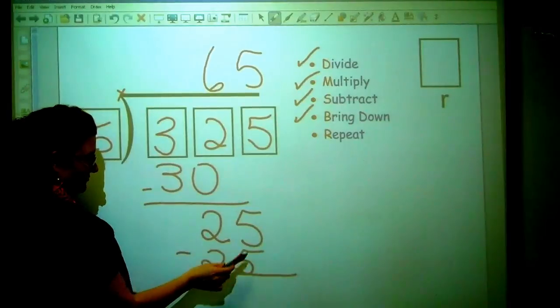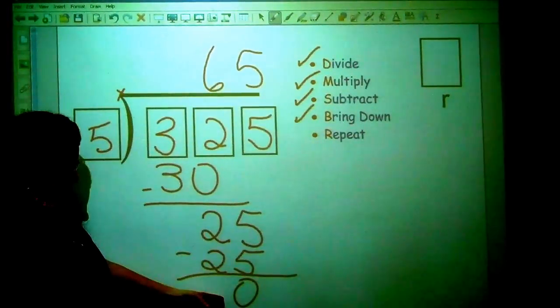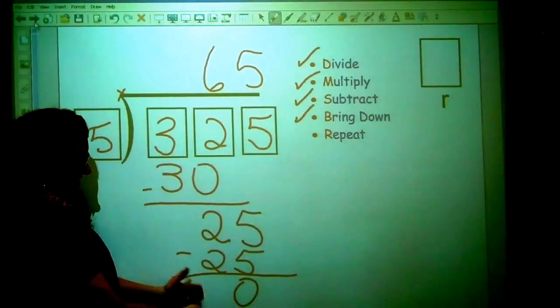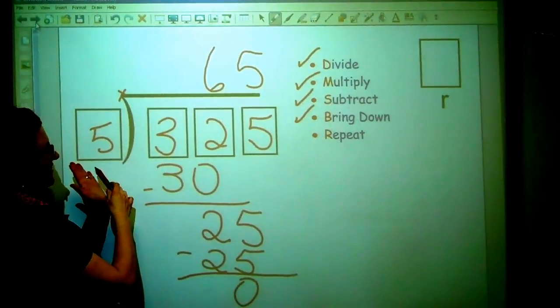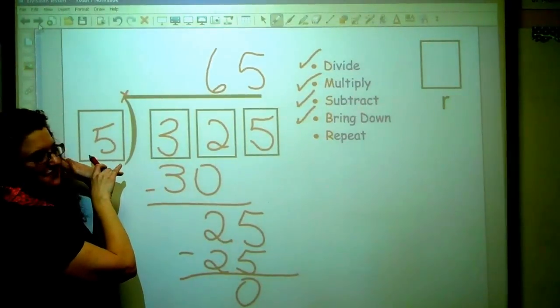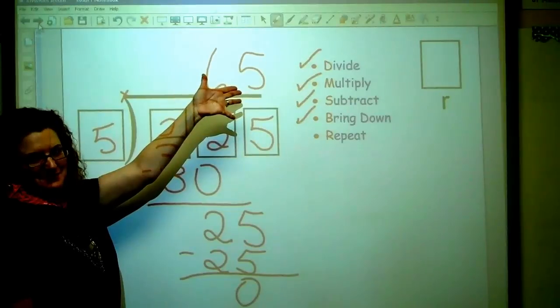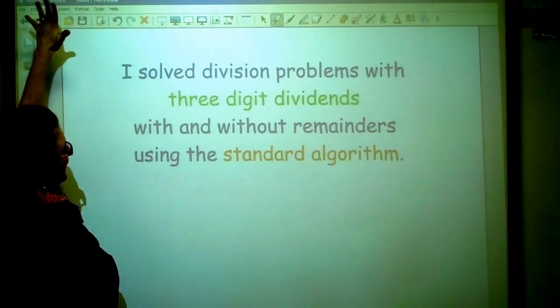Okay. So I did my multiplication, and now I'm doing my subtraction. 25 from 25 equals 0. There is nothing left to bring down. There is nothing to divide. So here I have a 3-digit dividend divided by a 1-digit divisor. And I get a 2-digit quotient with no remainder.